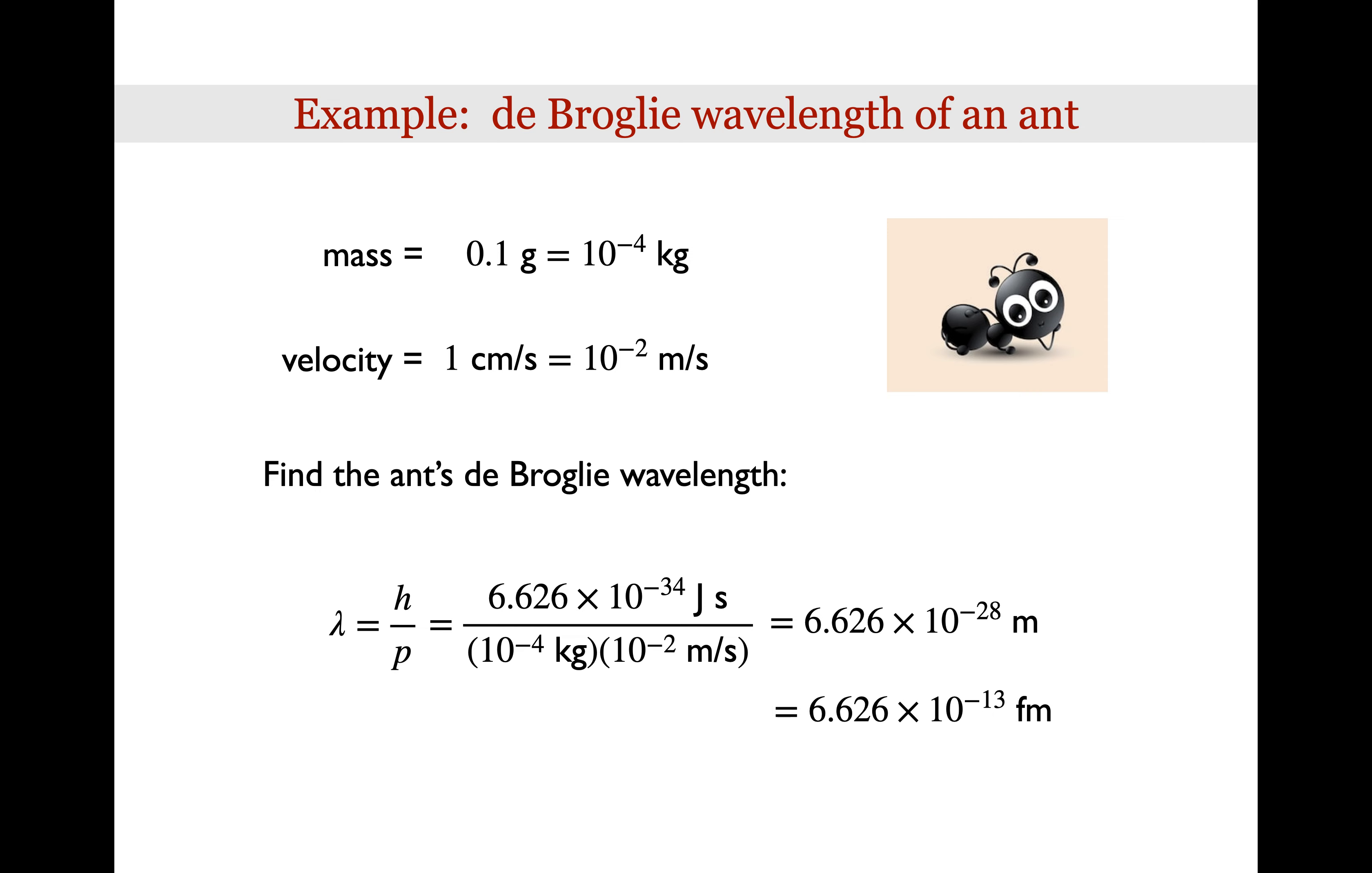For comparison, a Fermi is exactly 10 to the negative 15 meters and is the approximate size of an atomic nucleus. So if we convert our results into Fermis, we see that the de Broglie wavelength of the ant is less than 1 trillionth of the diameter of the ant. So the de Broglie wavelength of almost any macroscopic object you can imagine is going to be far too small to actually measure experimentally. That doesn't mean that the ant doesn't have a wave-like nature. It just means it's too small for us to measure.